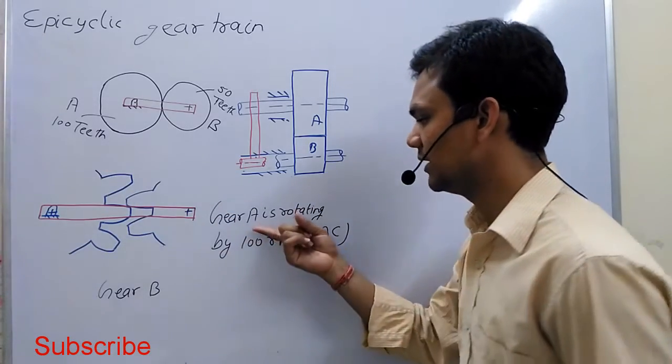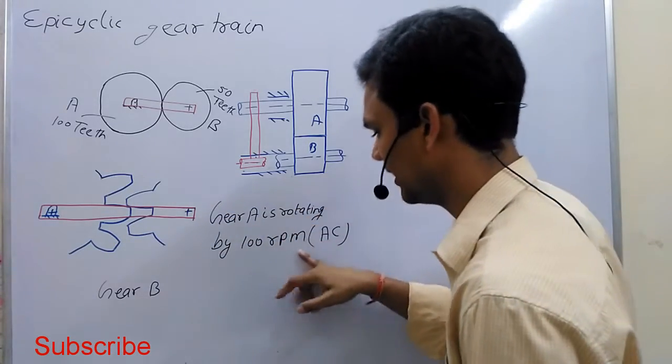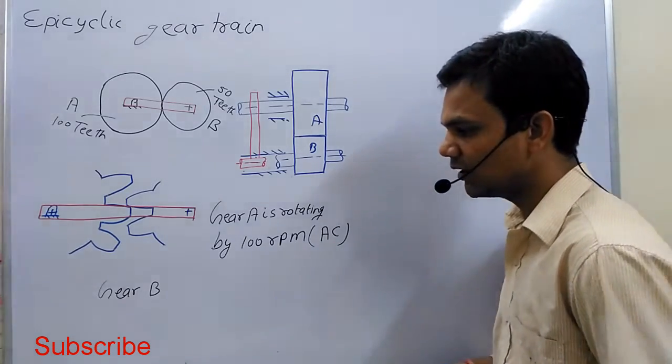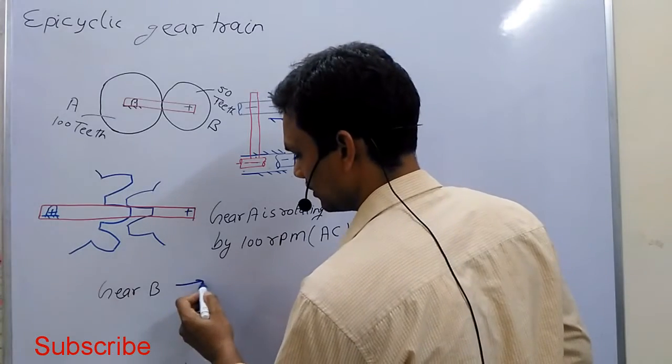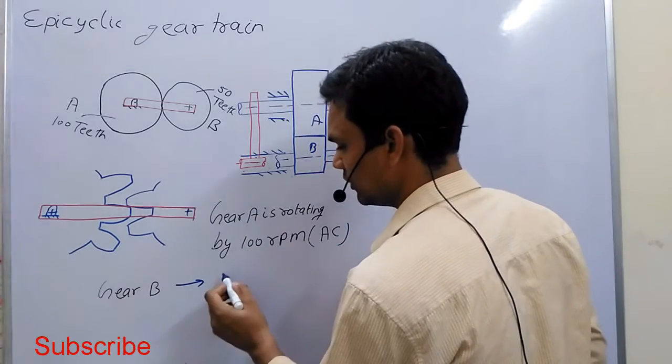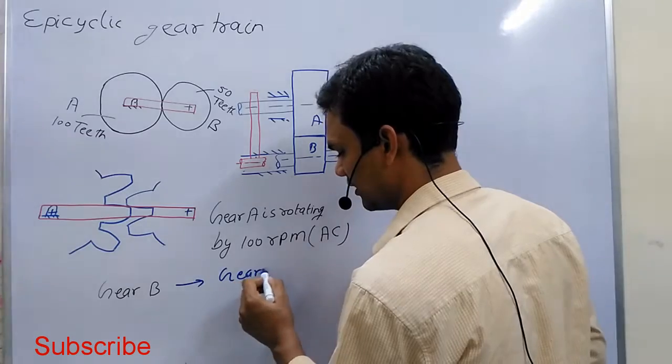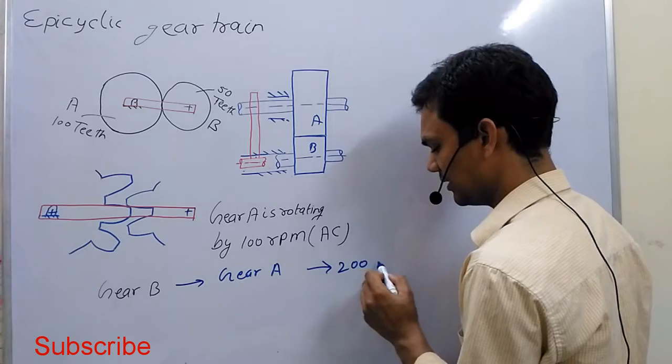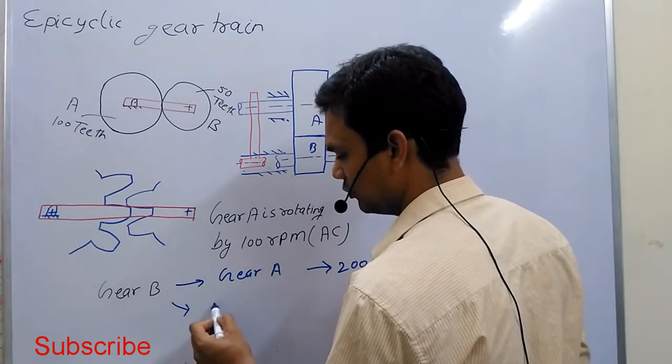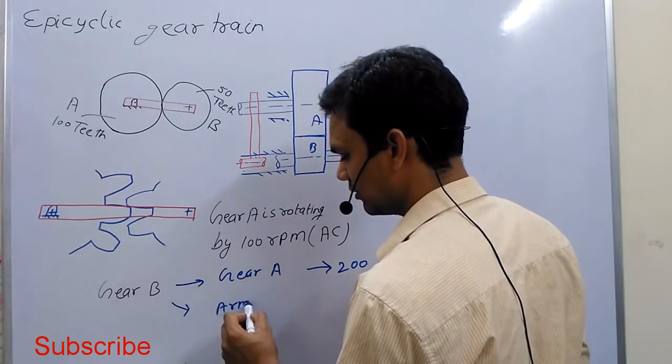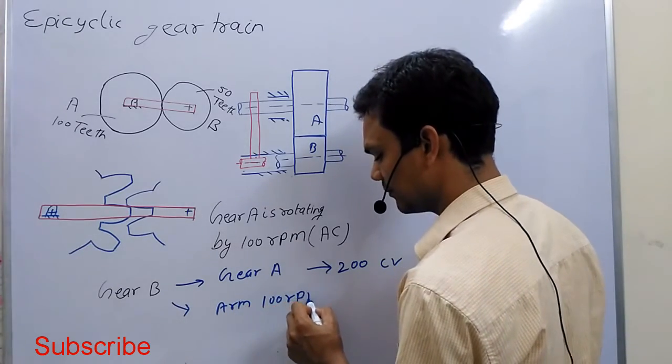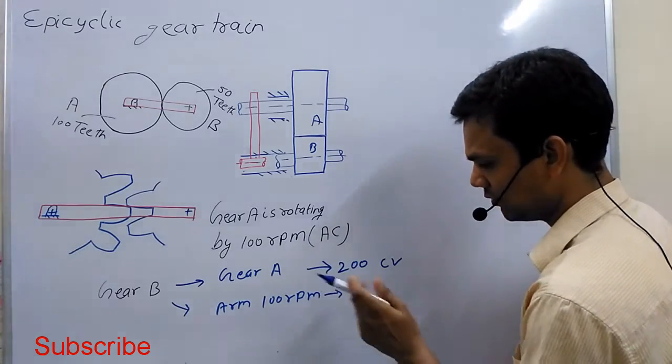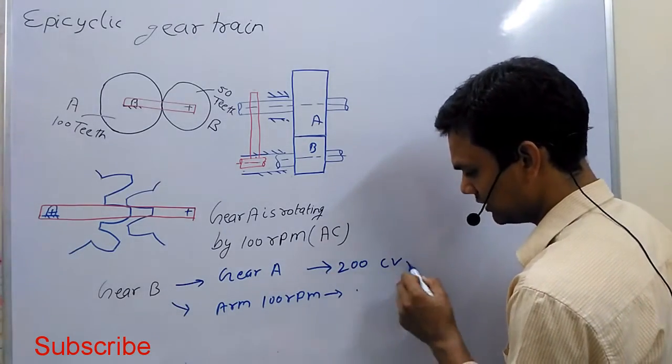We consider a case: suppose gear A is rotating at 100 rpm in an anti-clockwise direction. Due to this, gear B will rotate at 200 rpm in a clockwise direction. And suppose the arm is rotating at 100 rpm, then the total rotation of the gear will be due to this.